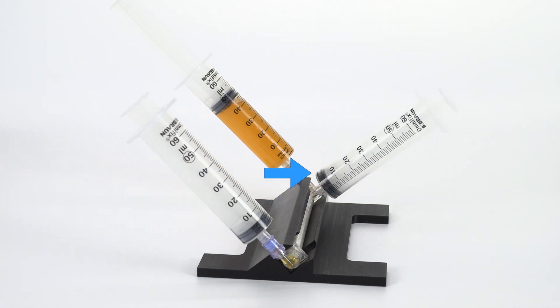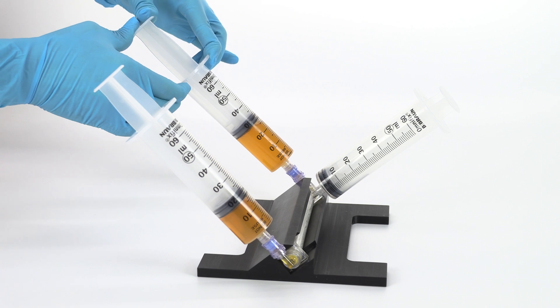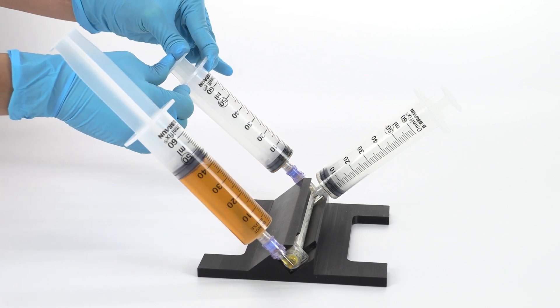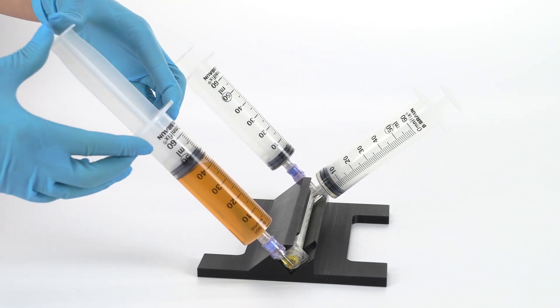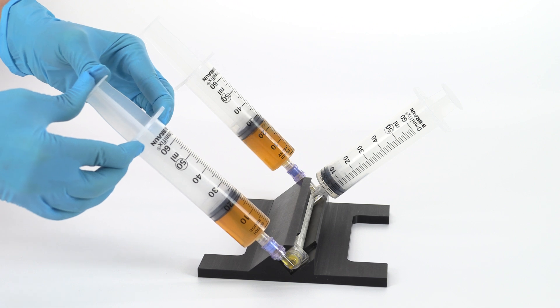Attach a 60 milliliter syringe to the effluent port. Inject plasma through the ultrafiltration device into the opposing syringe. Keep injecting back and forth until the plasma concentrates to approximately 14 milliliters or the desired amount.